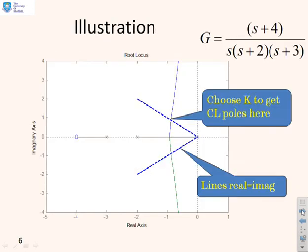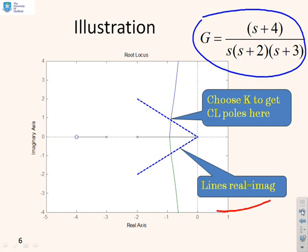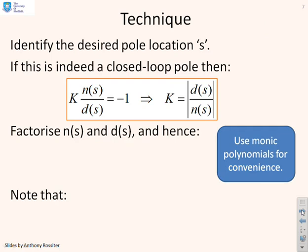Here's an illustration. The root loci are given for G = (s+4) / (s(s+2)(s+3)). The question is: where is the best place to lie on these root loci? We want where the real and imaginary parts have the same magnitude — shown by the diagonal lines. The ideal location for the closed-loop poles is roughly there, and we want to find the K that puts us at that point on the root loci.